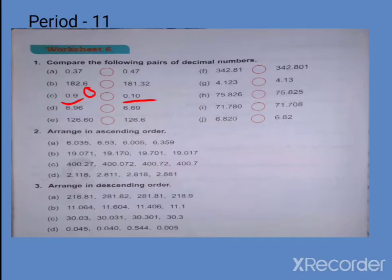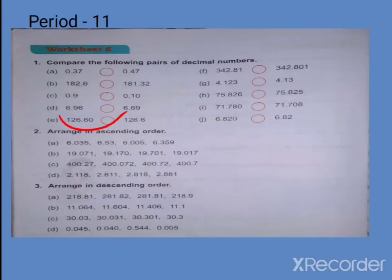यहाँ पर देखिए — 1.0 लगाती है, यह 91 गया। So which is greater? 10 is not greater, this is greater। Next — यहाँ देखिए — दोनों side 6 है, तो same है। अब next — इसमें 9 है, इसमें 6 — तो यह greater।